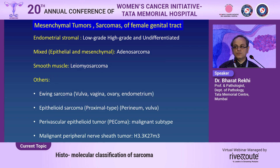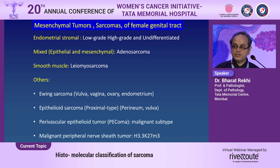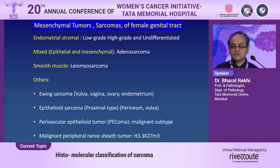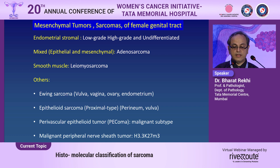The classification of endometrial stromal sarcomas is stratified in three genetic flavors: low-grade, high-grade, and undifferentiated. Then you can have adenosarcoma — also called Mullerian adenosarcoma — if there is a benign to atypical epithelial component with mesenchymal tissue. The malignant counterpart of smooth muscle is leiomyosarcoma. Rare tumors include Ewing sarcomas across the female genital tract, proximal-type epithelioid sarcomas with proclivity for the perineum and vulva, malignant perivascular epithelioid cell tumors (PEComas), and rarely MPNSTs driven by histone H3.3 K27ME3.